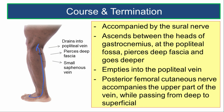The small saphenous vein ascends between the two heads of gastrocnemius, and at the popliteal fossa, it pierces the deep fascia and goes deeper, where it empties into the popliteal vein. The posterior femoral cutaneous nerve accompanies the upper part of the small saphenous vein while passing from deep to superficial aspect.